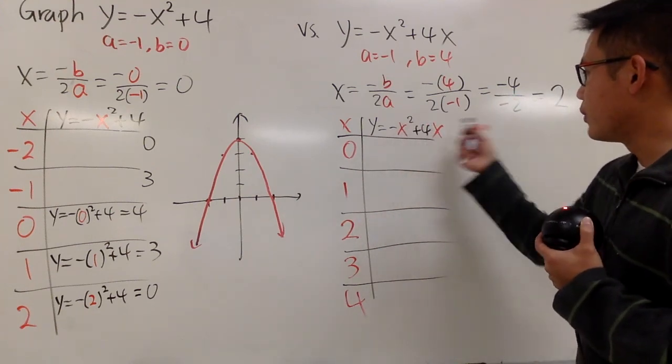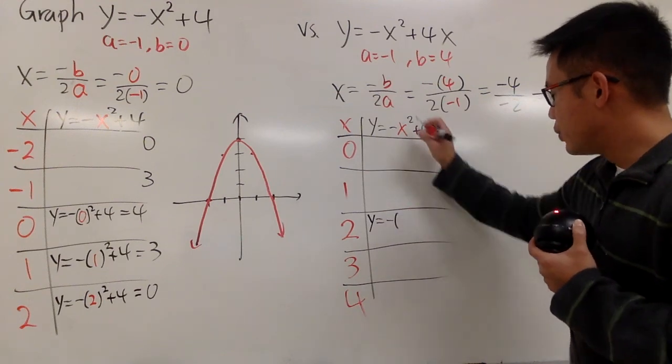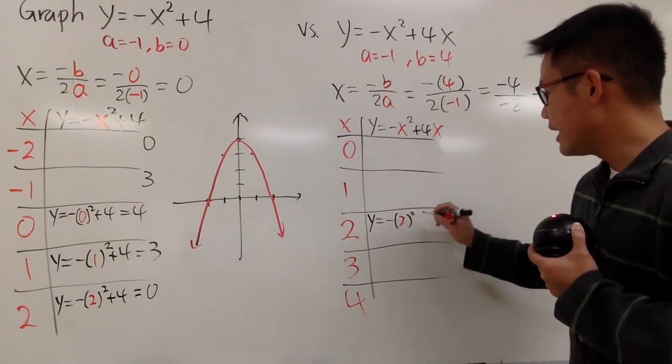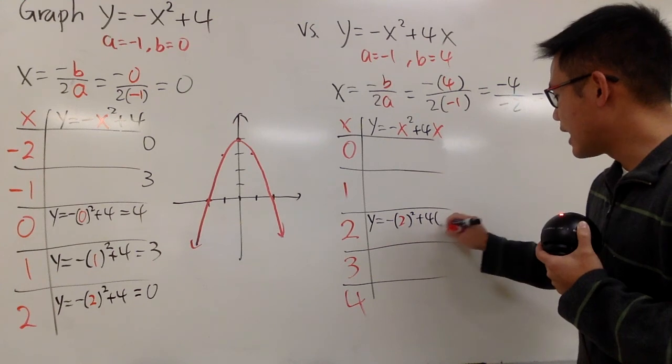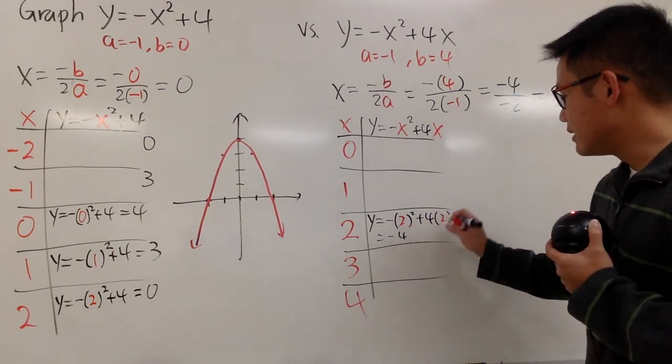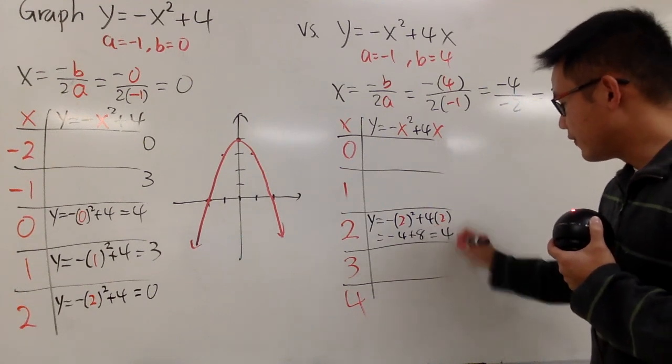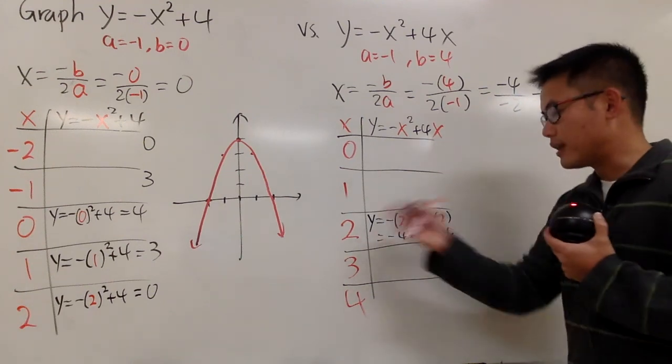Let's plug in 2 into all the x here. We know y would be negative 2 squared like this and then plus 4 times 2. And then this right here is negative 4 and then this is plus 8. So if you work this out, you get 4 for the final y value when x is equal to 2.